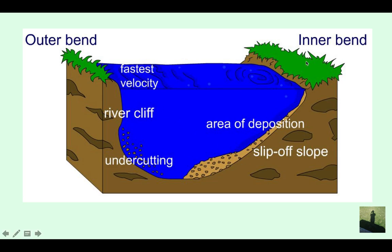This is a cross section of a meander here. As you can see, the fastest velocity is coming along here. You've got the slower velocity here. This will be the inner bend and this is the outer bend. Because the water is flowing slower here, depositing more sediment, it has less energy. Whereas here is not being deposited. It's actually eroding here.